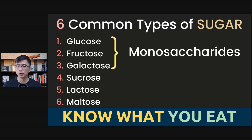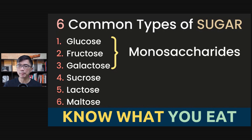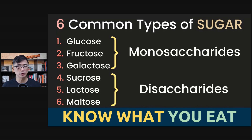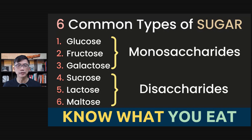Let's start. Glucose, fructose, and galactose are monosaccharides, meaning that they are made up of a single unit or molecule of sugar. Whilst sucrose, lactose, and maltose are disaccharides, meaning that they are made up of two units or molecules of sugar.